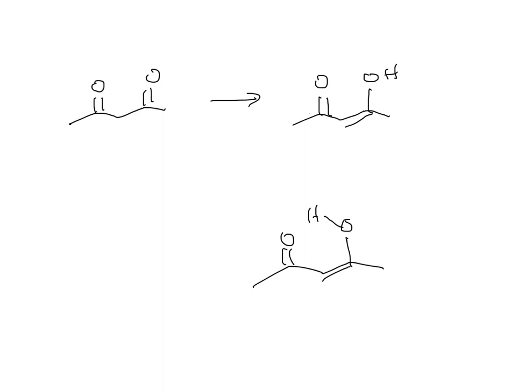Beta-diketones are the compounds most likely to exist in their enol forms, because once one of the ketones has tautomerized to the enol, the OH on that tautomerized ketone — I've redrawn the structure here — can have hydrogen bonding to the carbonyl oxygen on the other ketone.